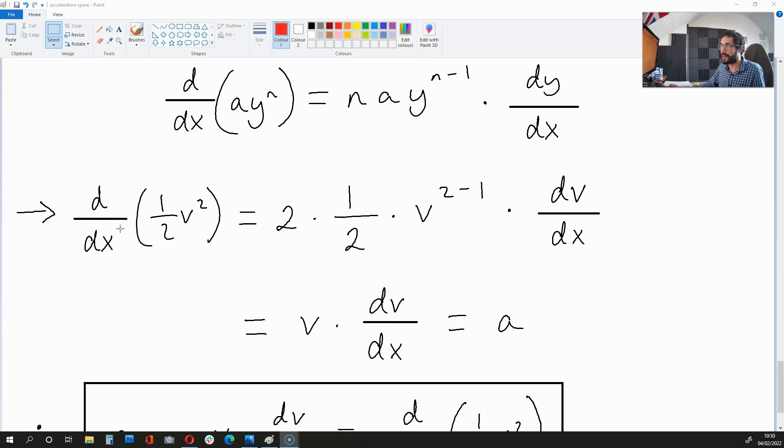is equal to 2 times a half times v to the power of 2 minus 1 times dv over dx.